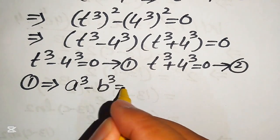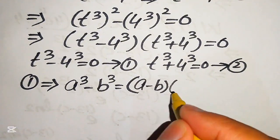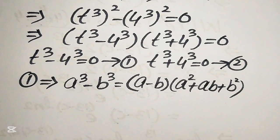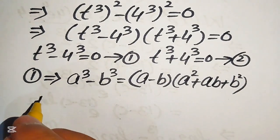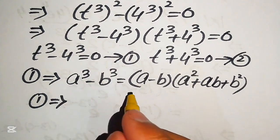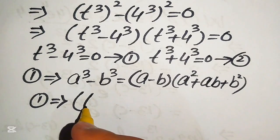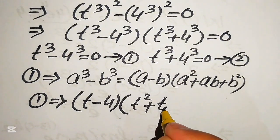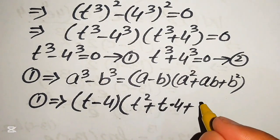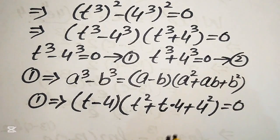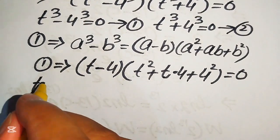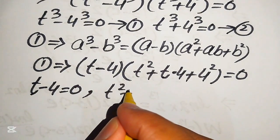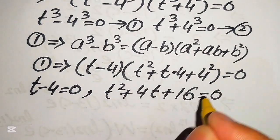The cubic formula states that a³ minus b³ equals (a minus b)(a² plus ab plus b²). Applying this to equation number 1 with a = t and b = 4, we get (t minus 4)(t² plus 4t plus 16) equals 0. We divide this into two cases: t minus 4 equals 0, and t² plus 4t plus 16 equals 0.